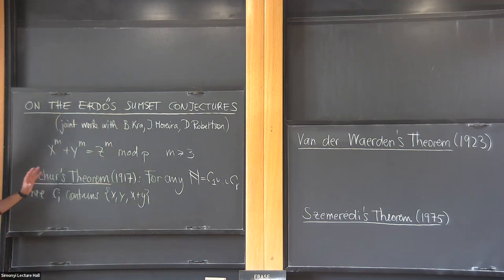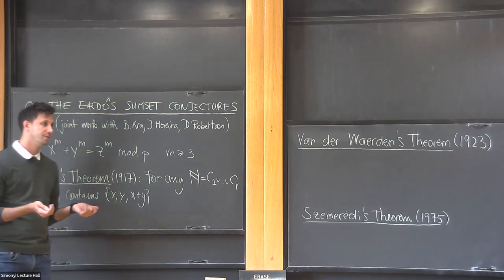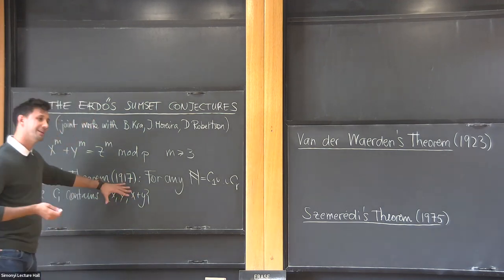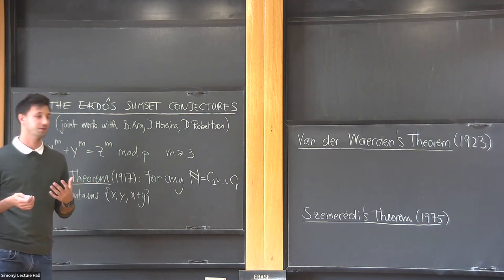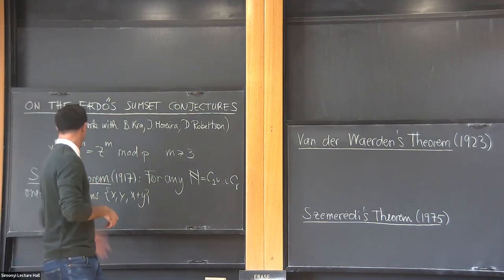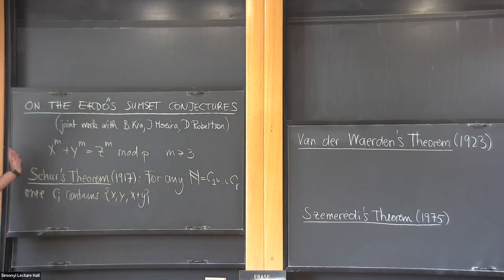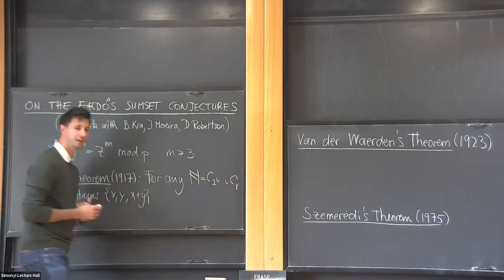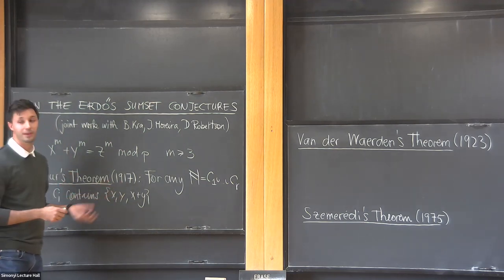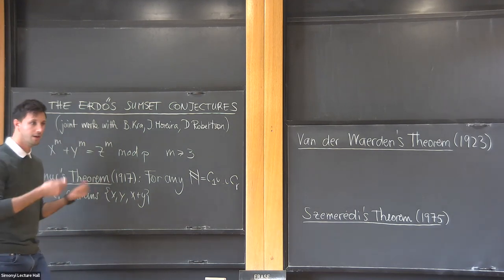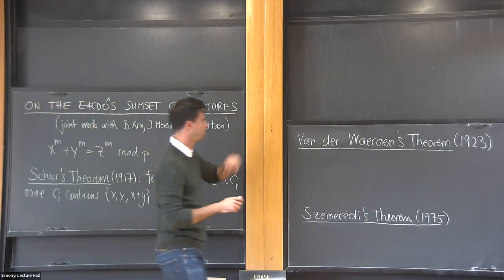Historically speaking, this is the first result of an area that today we call Ramsey theory. The philosophy behind Ramsey theory is that if you have a set that's sufficiently large, it should contain some sort of arithmetic structure. Schur, inspired by his at the time lemma, nowadays theorem, went forth and asked, well maybe it's possible that whenever you have a finite coloring of the integers, one of those colors contains even more arithmetic arrangements, maybe arbitrarily long arithmetic progressions. So that's what he conjectured, and it was proved by van der Waerden in 1923.